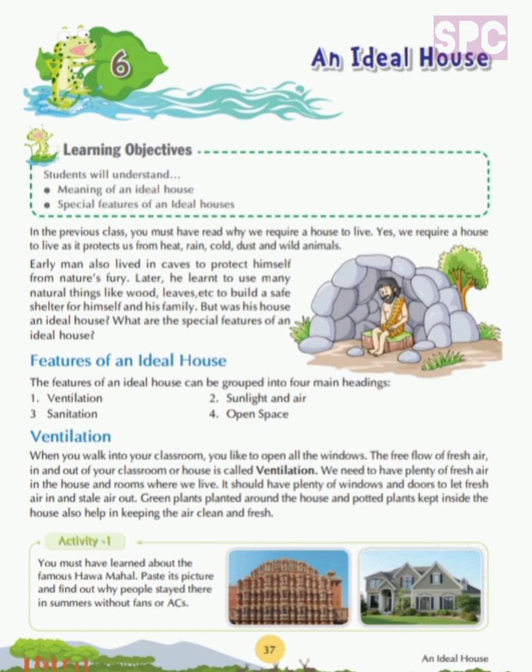First is ventilation. When you walk into your classroom, you like to open all the windows. The free flow of fresh air in and out of your classroom or house is called ventilation. We need to have plenty of fresh air in the house and rooms where we live. It should have plenty of windows and doors to let fresh air in and stale air out. Green plants planted around the house and potted plants kept inside also help in keeping the air clean and fresh.